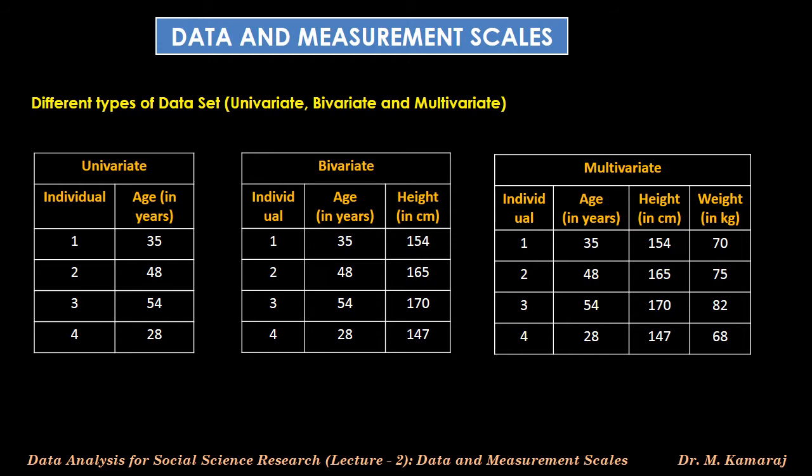If a dataset consists of two variables, it is called bivariate data. For example, in the second table, age and height of individuals are given — age in years, and height in centimeters as 154, 165, 170, and 147. If a dataset consists of more than two variables, it is referred to as a multivariate dataset. In the third table, the variables age, height, and weight are given for easy understanding.